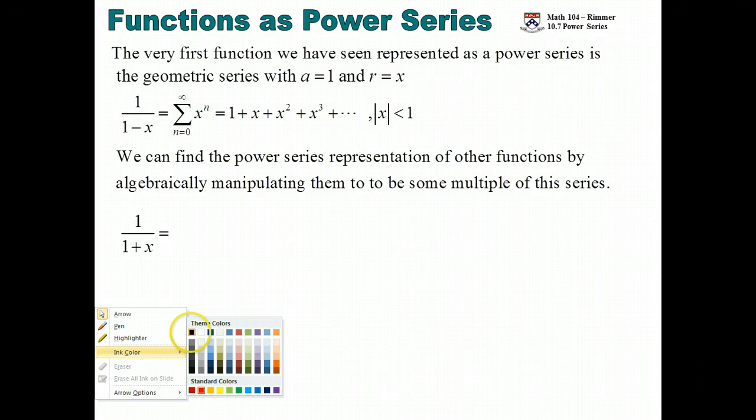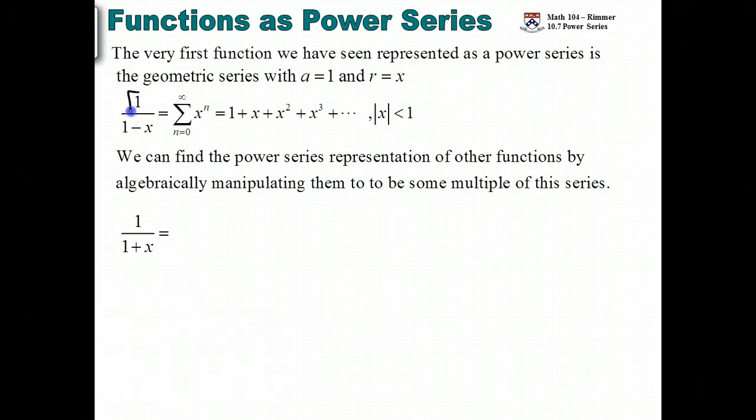Go back to what we already know and look at the individual elements of it. This numerator needs to be a 1, and it is. Great. The denominator needs to have a 1 in front, and it does. Great. Now, in ours, we need the next sign after the 1 to be a negative. But what we are looking at right now has a plus. So we make it negative by saying 1 plus x is the same thing as 1 minus negative x.